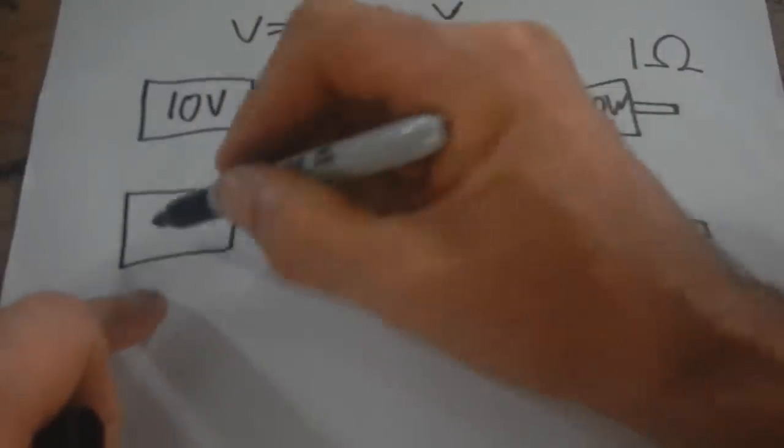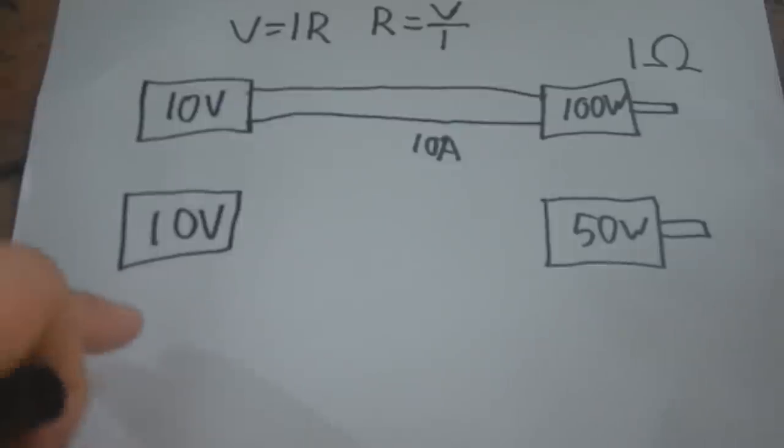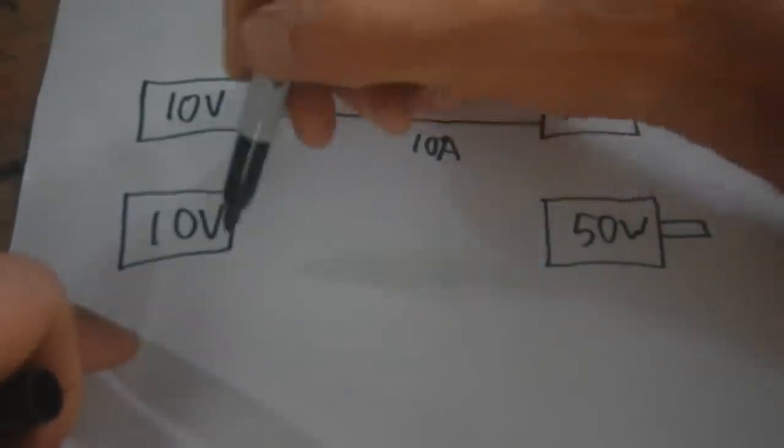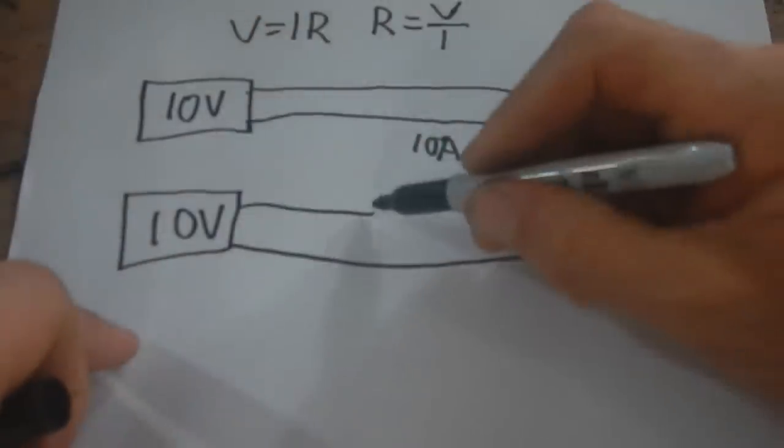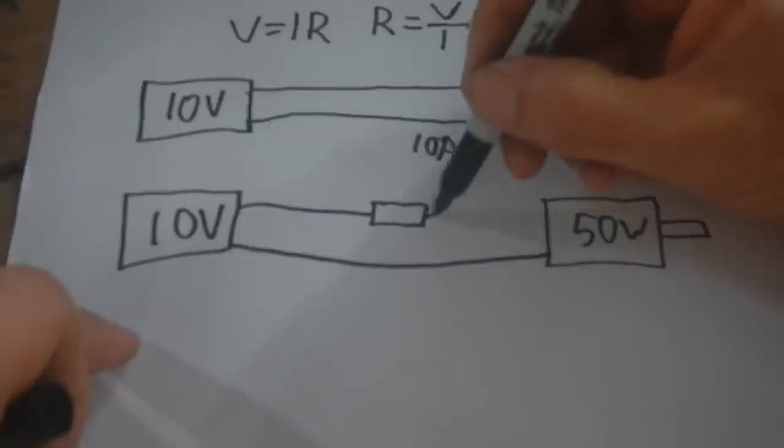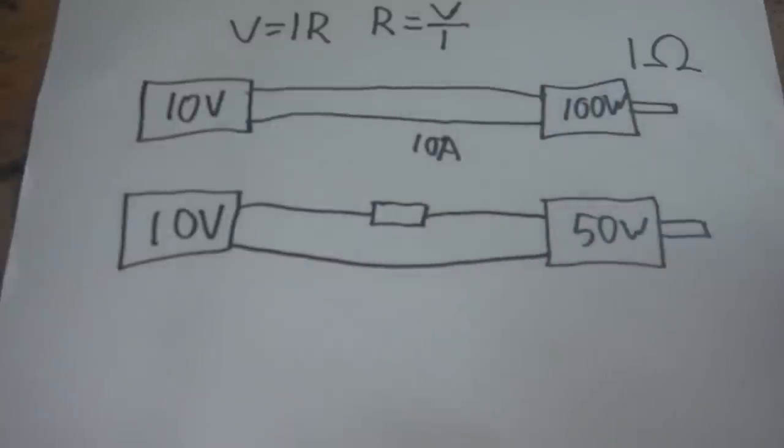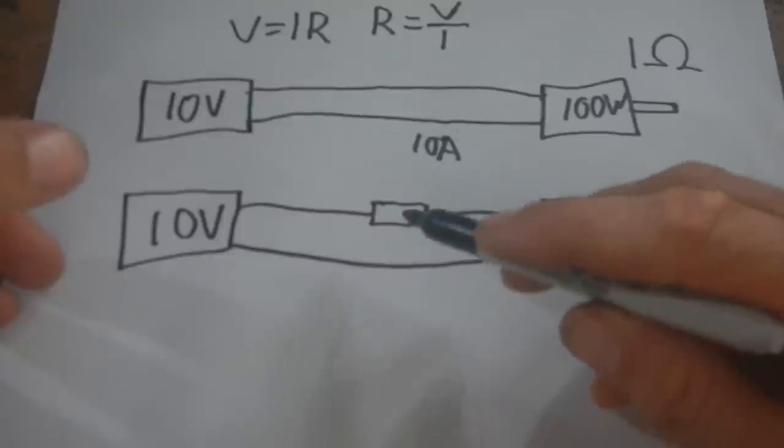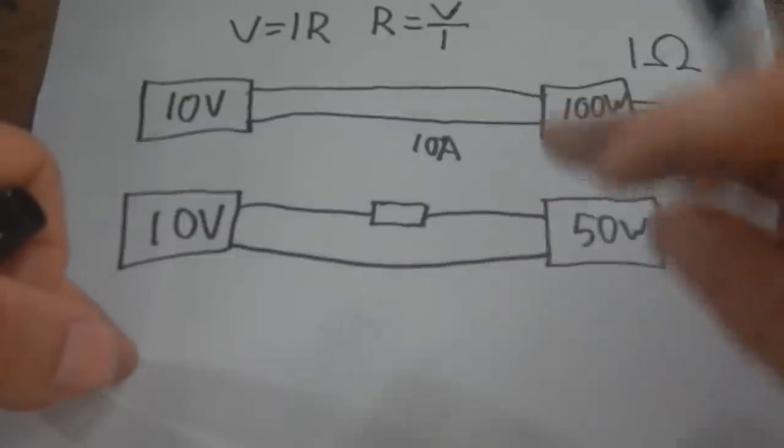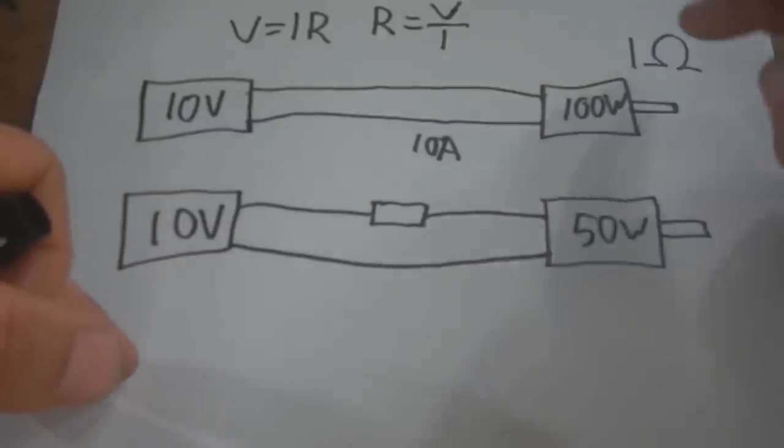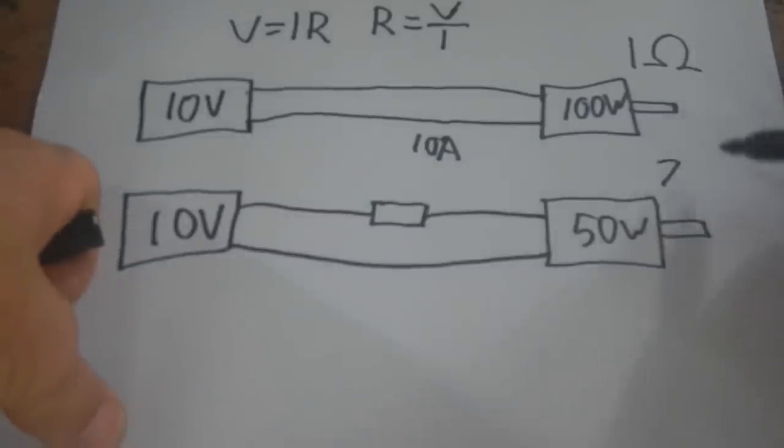Let's say we want to run the motor at 50 watts. Our battery is still 10 volts. We connect one wire the same, and in this wire we throw a resistor that slows down the electricity by throwing away part of the voltage. To get 50 watts, we know the resistance is 1, so I'm not going to get exact, but 7 times 7 equals 49—that's close enough to 50. So let's go with 7 volts and 7 amps.